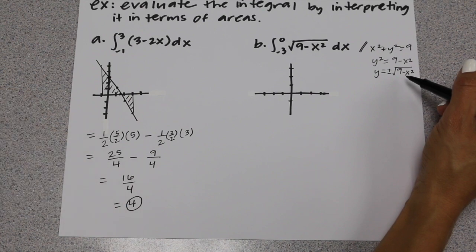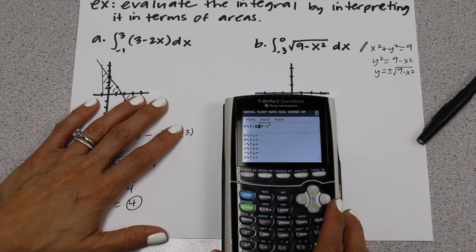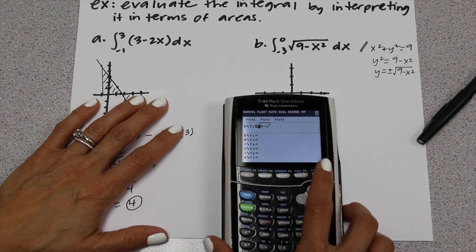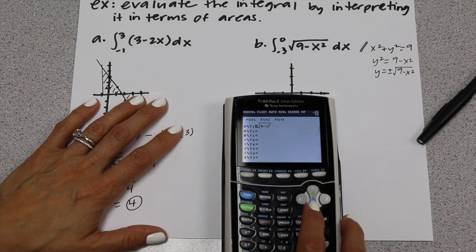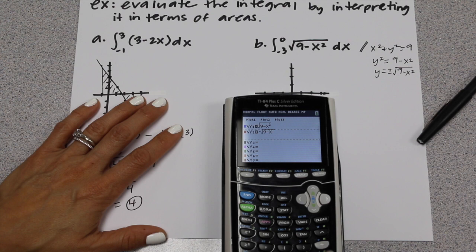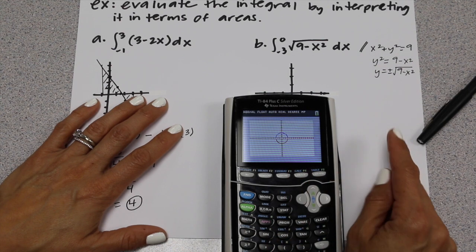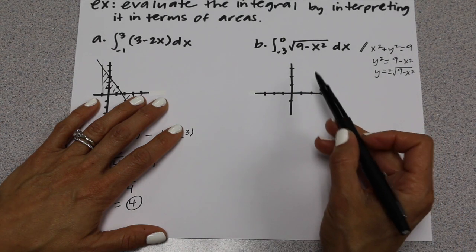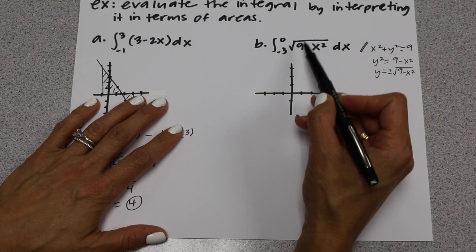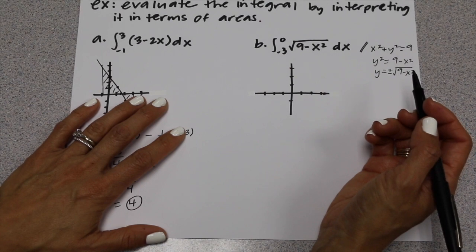This represents the top half and the bottom half of the circle. The positive square root, y equals positive square root of (9 minus x²), gives the top half of the circle. The negative square root gives the bottom half. So when we look at this definite integral with the square root of (9 minus x²), we're looking at the top half of the circle with center (0, 0) and radius 3.